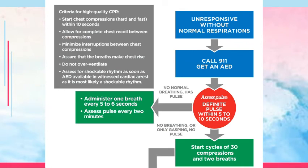The criteria for high-quality CPR include: start compressions hard and fast within 10 seconds of recognizing arrest; allow for complete chest recoil between compressions — this allows the heart to return to its normal state and enables ventricular filling; minimize interruptions between chest compressions — shift between compressors when checking the patient's rhythm; ensure that breaths make the chest rise; do not over-ventilate; assess for shockable rhythm as soon as the AED arrives. In a witnessed cardiac arrest, the rhythm is most likely shockable, typically ventricular fibrillation.